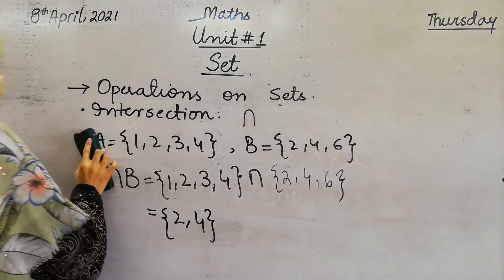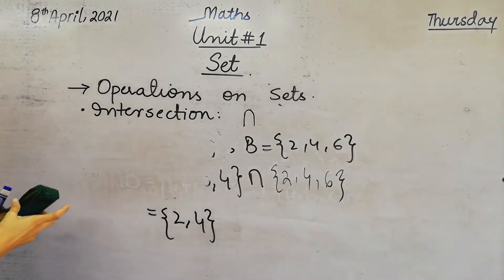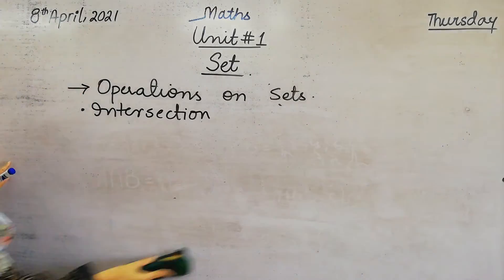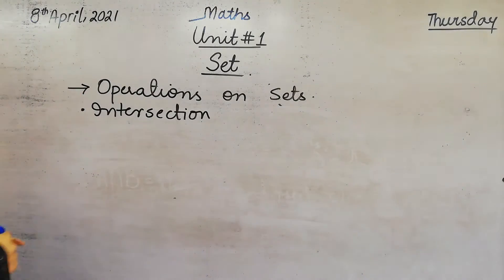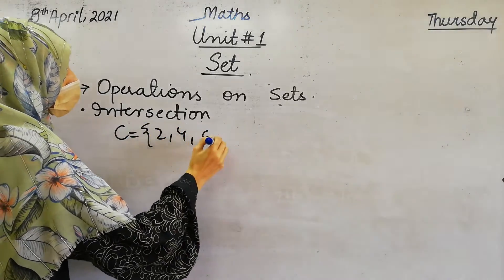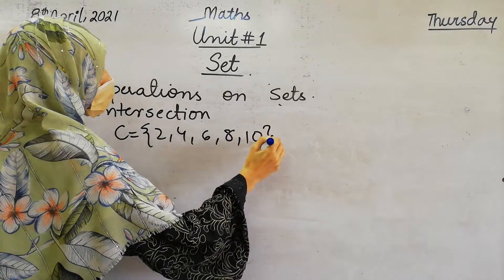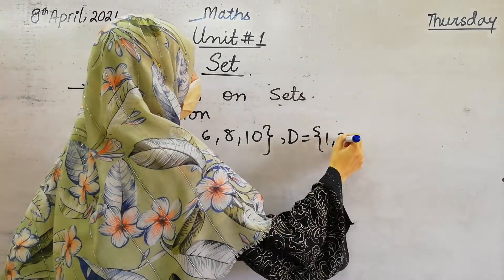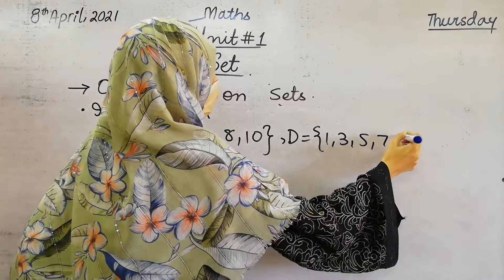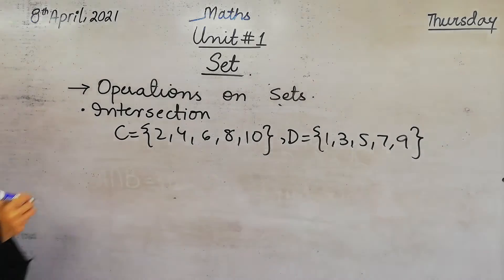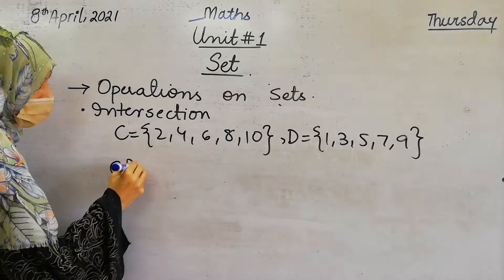Let's see another example. Set C contains 2, 4, 6, 8, 10. And set D contains 1, 3, 5, 7, and 9. Now we have to find the intersection of C and D.